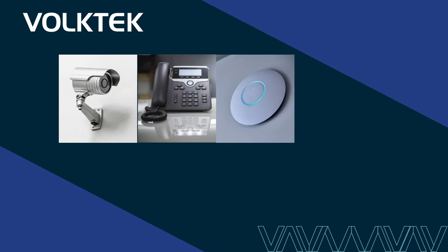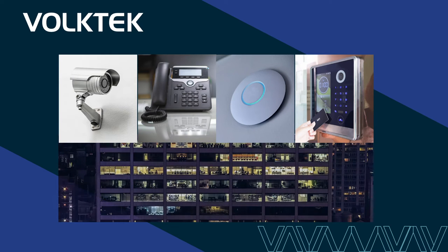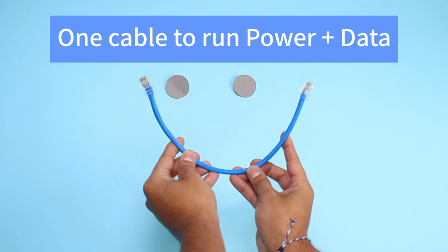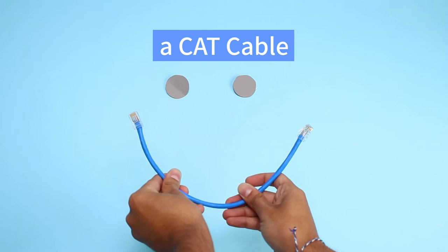Surveillance cameras, VoIP phones, wireless access points, and ID verification devices are common things found in an office or house network. All of these devices have in common that they use only one cable to run power and data, which looks like this — a CAT cable. Like the first time I noticed water evaporating in the hot sun, realizing that the phone at my desk was powered by one cable was kind of mind-blowing.